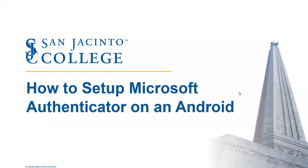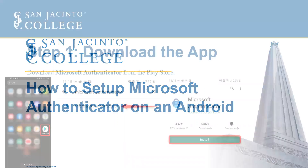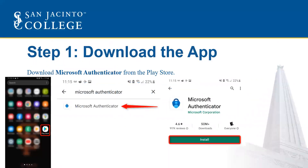This video will walk you through the steps on how to set up the Microsoft Authenticator app on an Android device. The first thing you're going to do is access the Play Store, search for Microsoft Authenticator, and then tap Install.